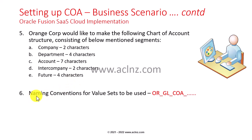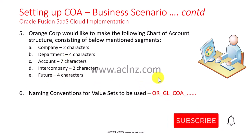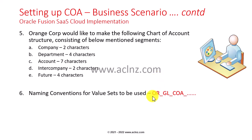The naming convention for all these value sets will be something like: 'OR' for Orange, then 'GL' because it belongs to the GL accounting flex field, then 'COA' for chart of account structure, and then a short label such as underscore company, underscore department, account, intercompany, and future for each of these value sets respectively. Now I will jump into Fusion SaaS applications and create these value sets for our chart of account with this naming convention.